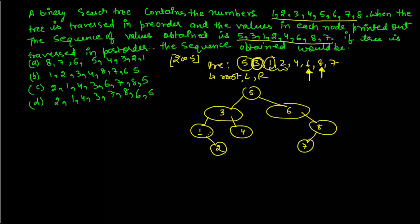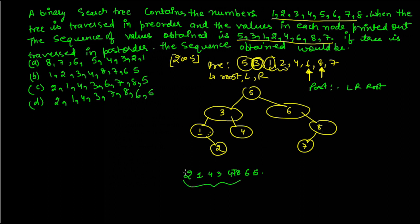Now finding the post-order traversal. Post-order is left-right-root. Traversing gives: 2, 1, 4, 3, 7, 8, 6, 5. Checking the options: 2, 1, 4, 3 matches and 7, 8, 6, 5 also matches, therefore option D is correct.